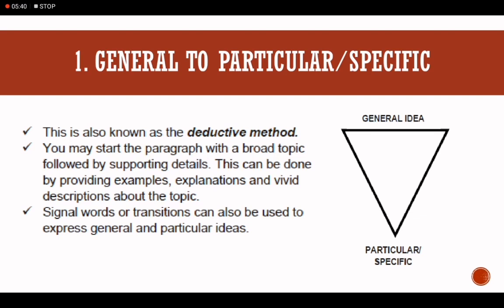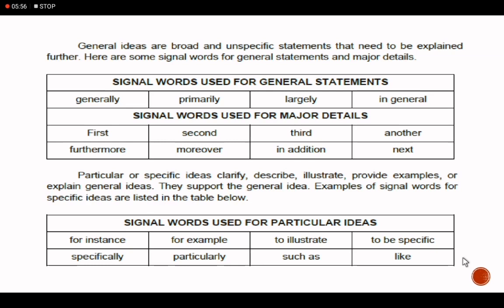Signal words or transitions can also be used to express general and particular ideas. Here are the signal words to signal general statements: 'generally,' 'primarily,' 'largely,' 'in general.' For major details, we use 'first,' 'second,' 'third,' and so on. Signal words used for particular ideas include 'specifically,' 'particularly,' 'for instance,' and so on. Please familiarize yourselves with this list of signal words for general statements, major details, and particular ideas.